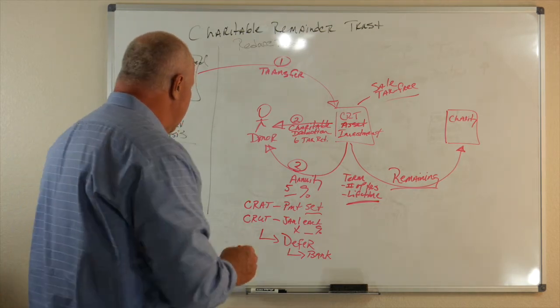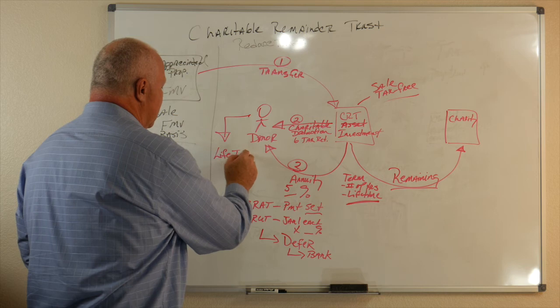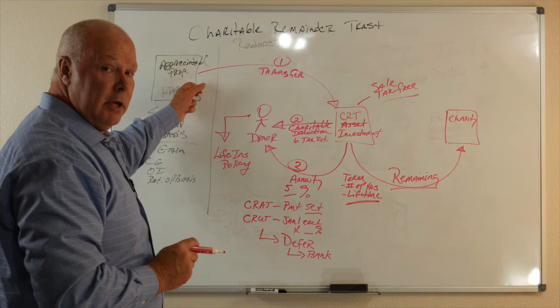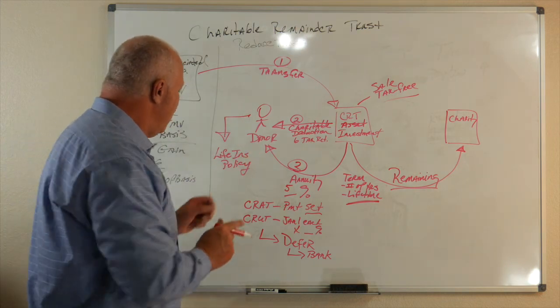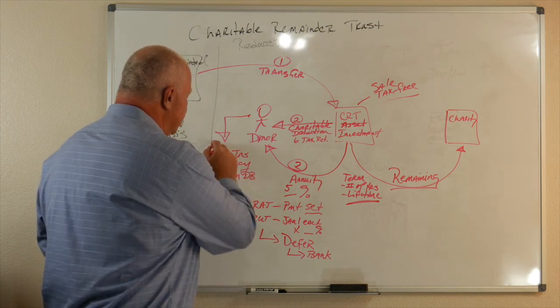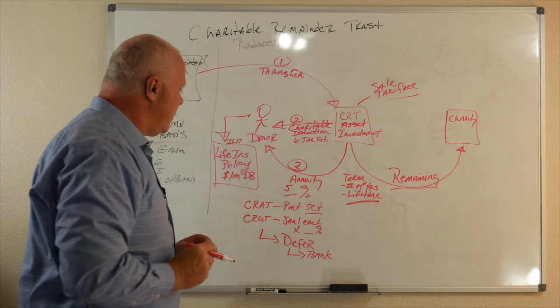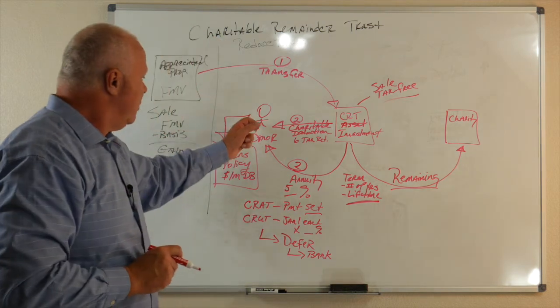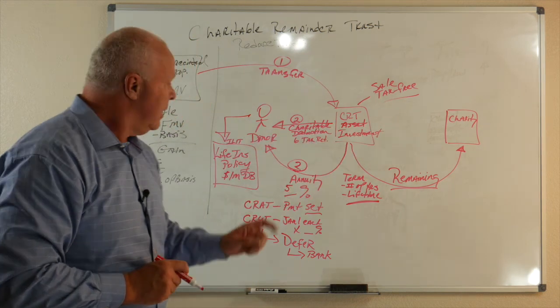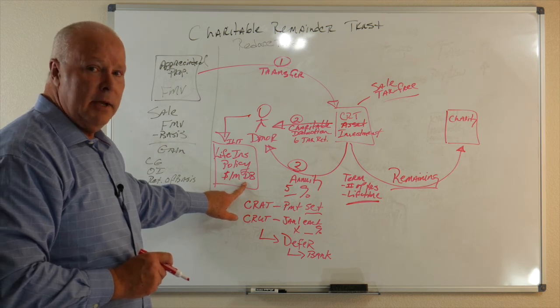So, what we can do is come over here for the donor, and let's get a life insurance policy. And for ease, let's say this was worth a million dollars, the asset. Now, I come and get, let's just see it easy, a million dollar death benefit policy, and I wrap that into an ILIT. So, I put it in trust, so now, when my donor passes away, asset goes to charity. Whatever's left in here goes to charity. The kids will now get a million dollars income and estate tax free.